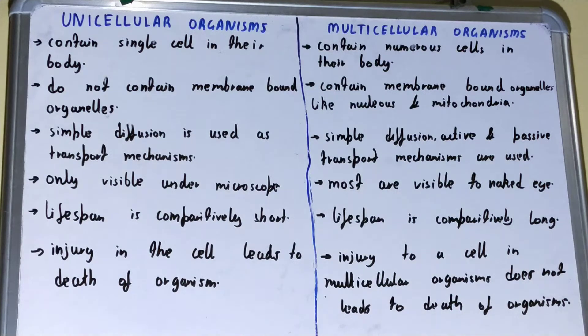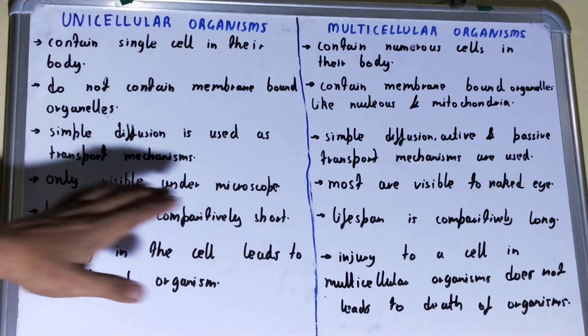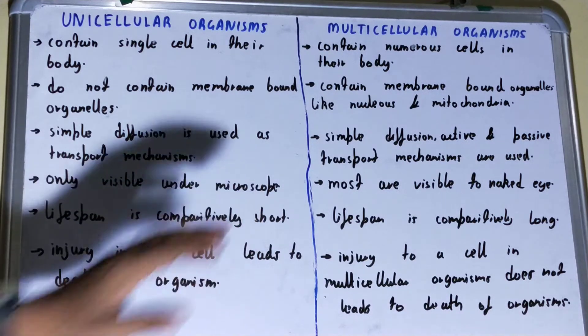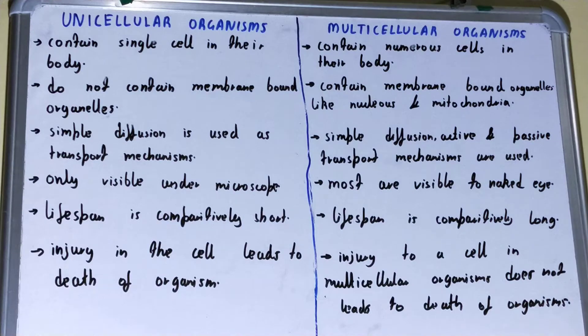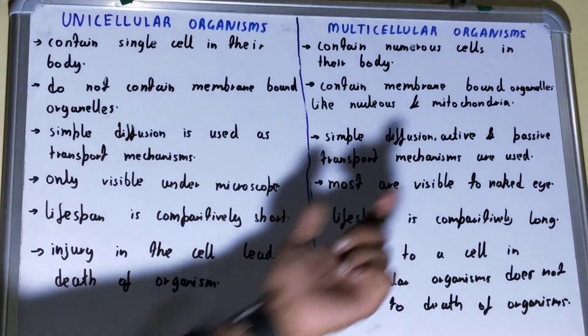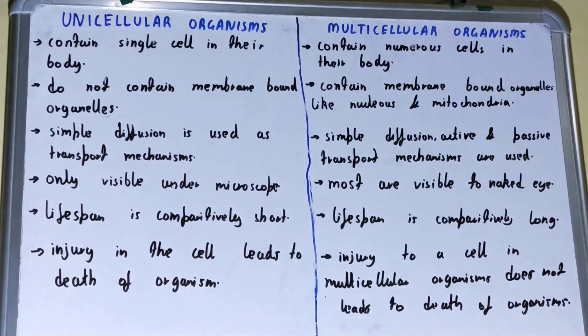Next, if we talk about the unicellular organisms, they are only visible under the microscope — not with the naked eye. But if we talk about the multicellular organisms, most of them are visible to the naked eye.